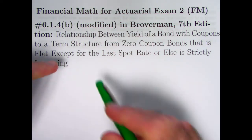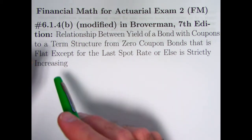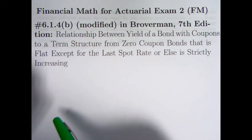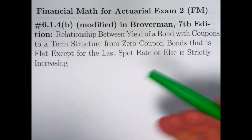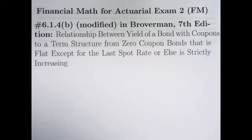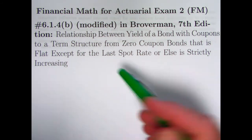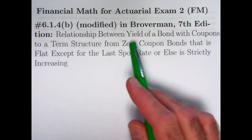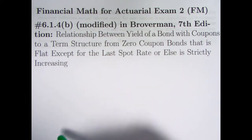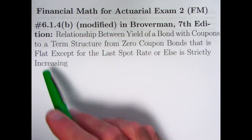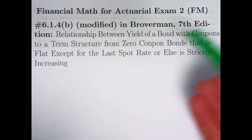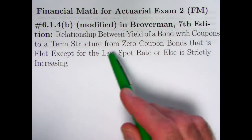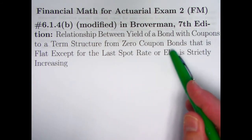Hi. In this video we're looking at a modified version of problem 6.1.4b from Broverman — actually, it's just an extension of what's given in that problem. It's about the relationship between the yield of a bond that's got coupons and a term structure, in other words a set of spot rates that come from zero coupon bonds.